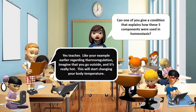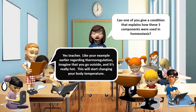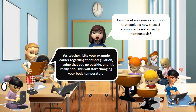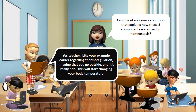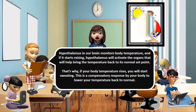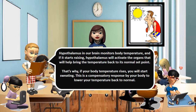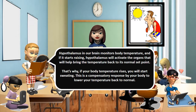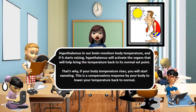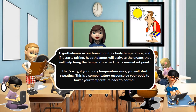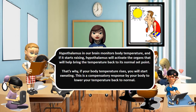Yes, teacher. Like your example earlier regarding thermoregulation — imagine that you go outside and it's really hot. This will start changing your body temperature. The hypothalamus in our brain monitors body temperature, and if it starts rising, the hypothalamus will activate the organs that will help bring the temperature back to its normal set point. That's why, if your body temperature rises, you will start sweating. This is a compensatory response by your body to lower your temperature back to normal.